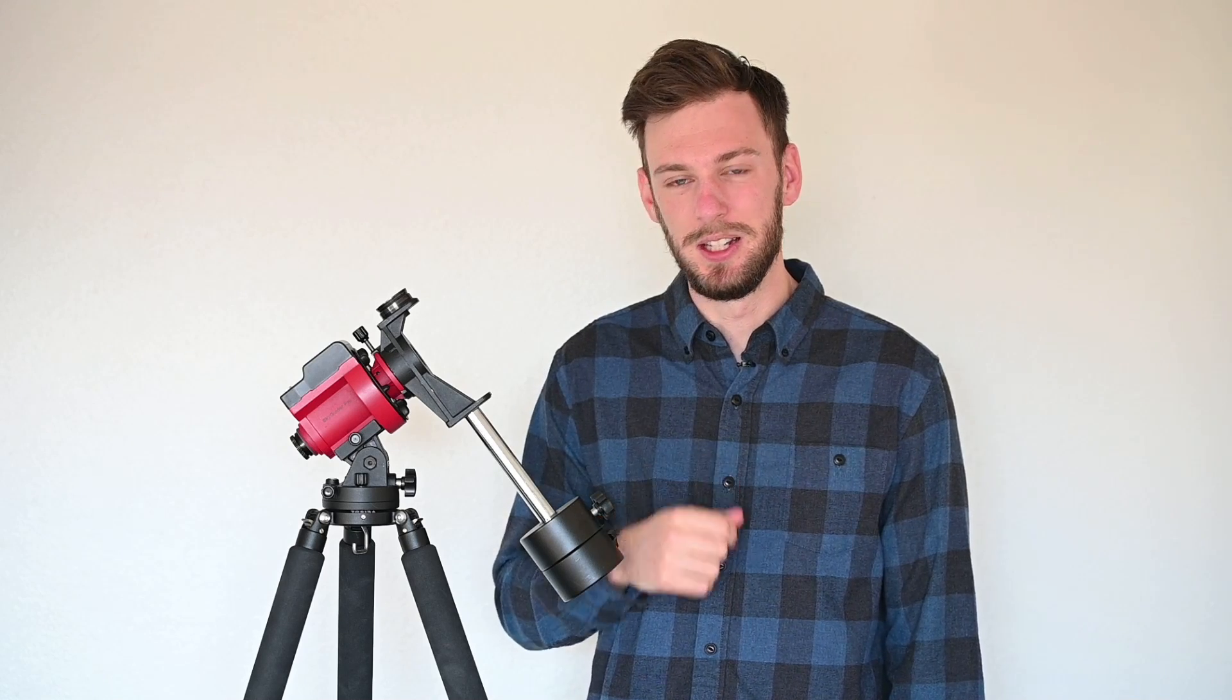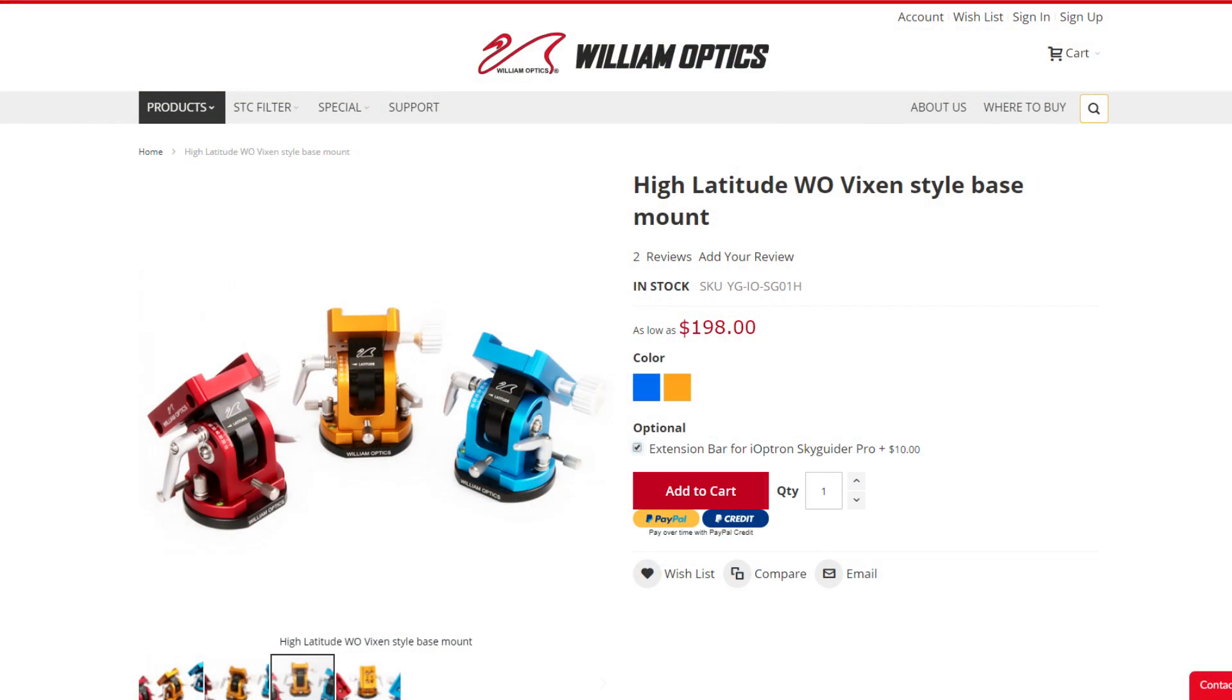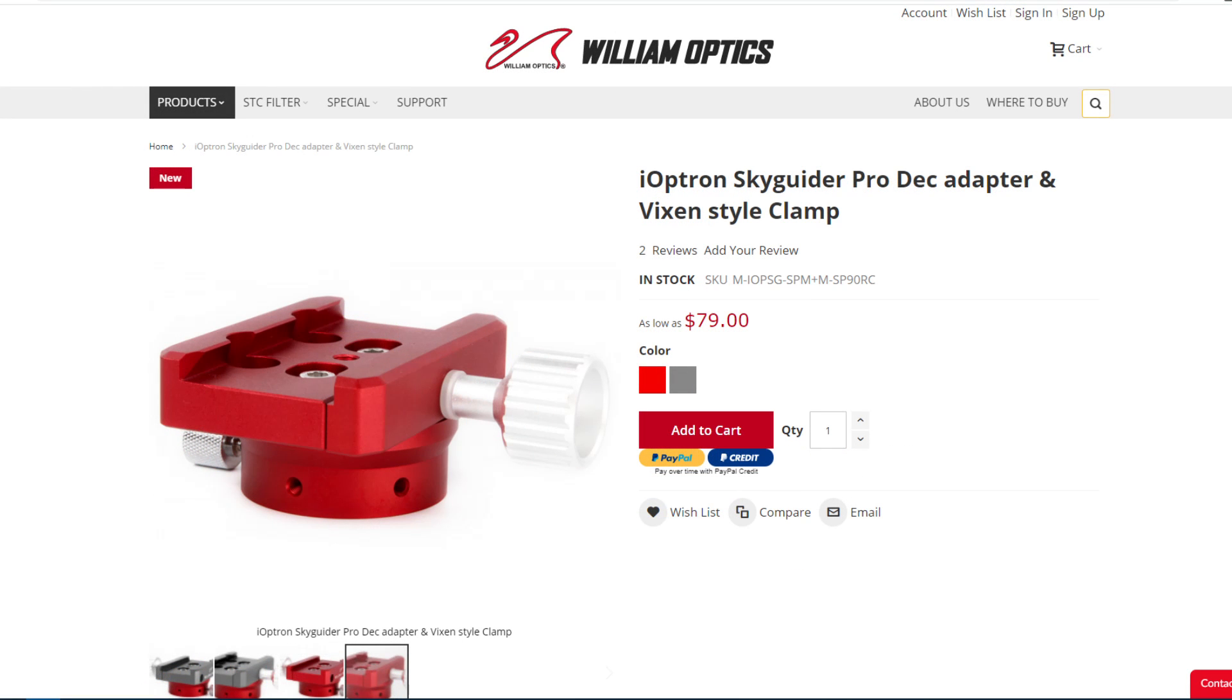Recently William Optics, a third party company, released a bunch of different parts for the SkyGuider Pro that really increase the usability if you're going to use a telephoto lens. That's what we're going to be looking at in today's video.